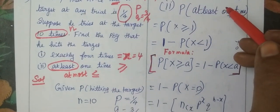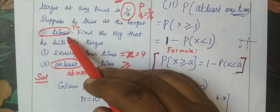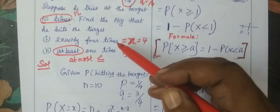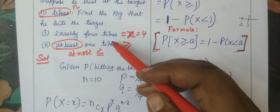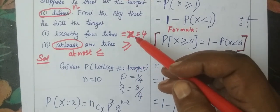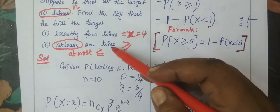Suppose he tries at the target 10 times, that is n equals 10. Find the probability that he hits the target exactly 4 times. Then, at least one time.